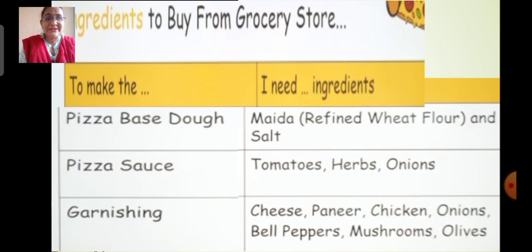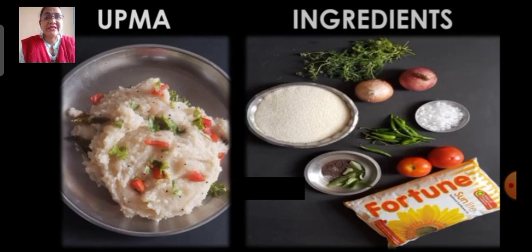So today you are going to make pizza at home! Next, here is one more example: upma. To make upma, the ingredients required are rava, onions, coriander, chilli, curry leaves, tomatoes, oil and salt. These are all the ingredients we require to make upma.